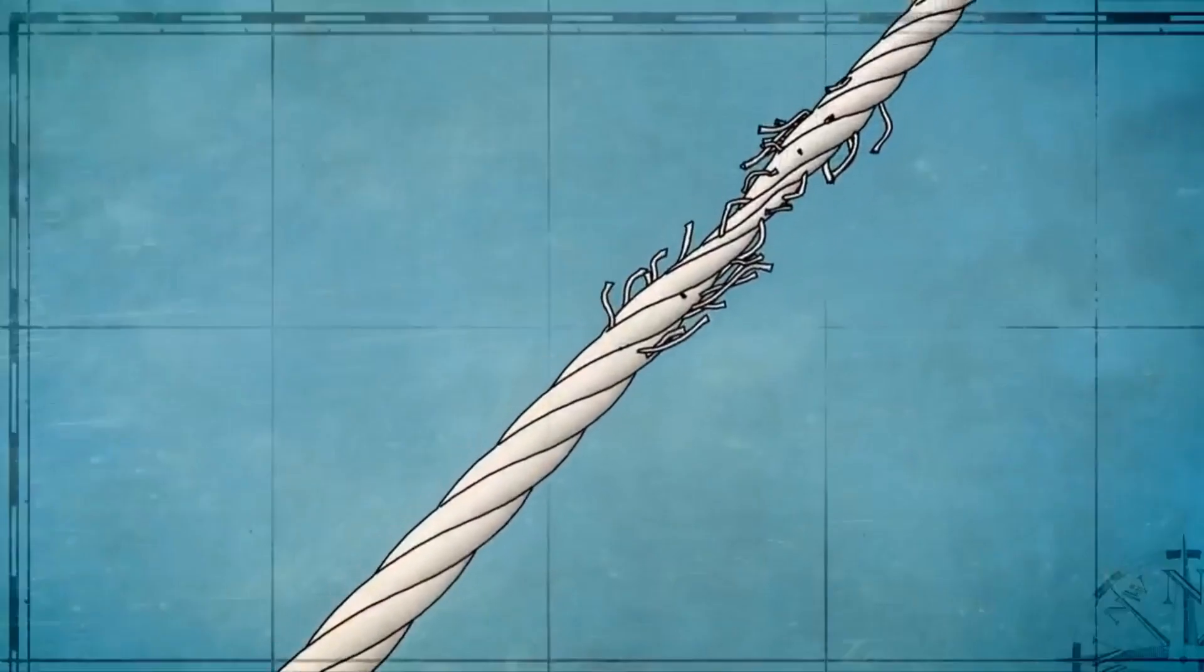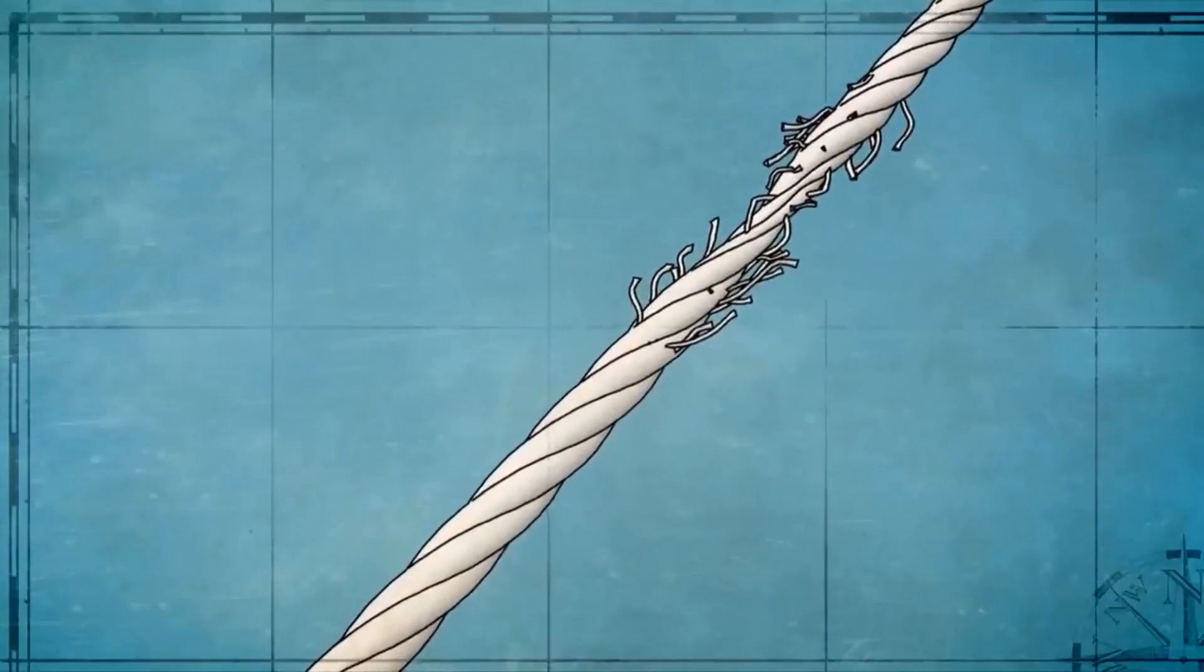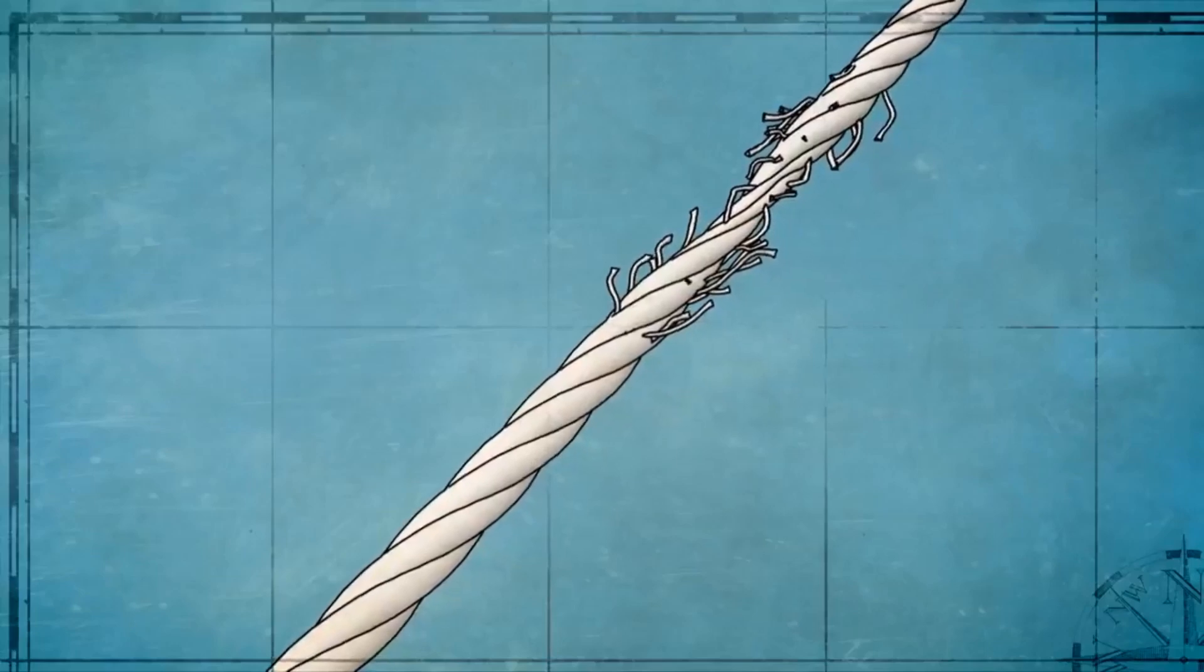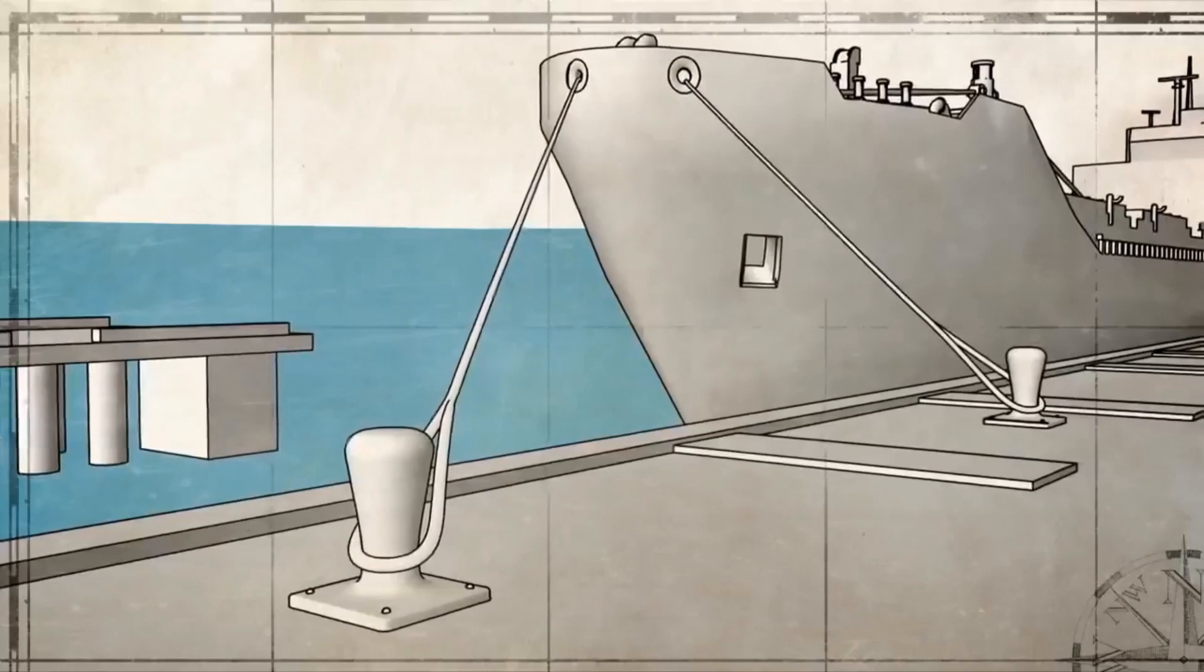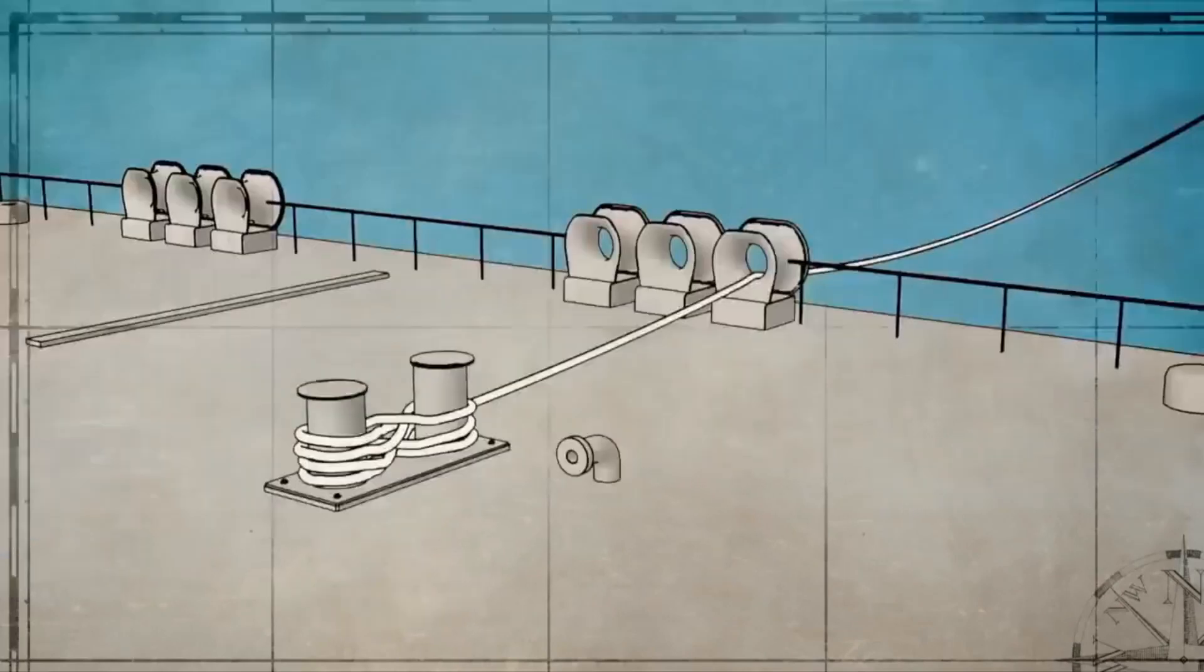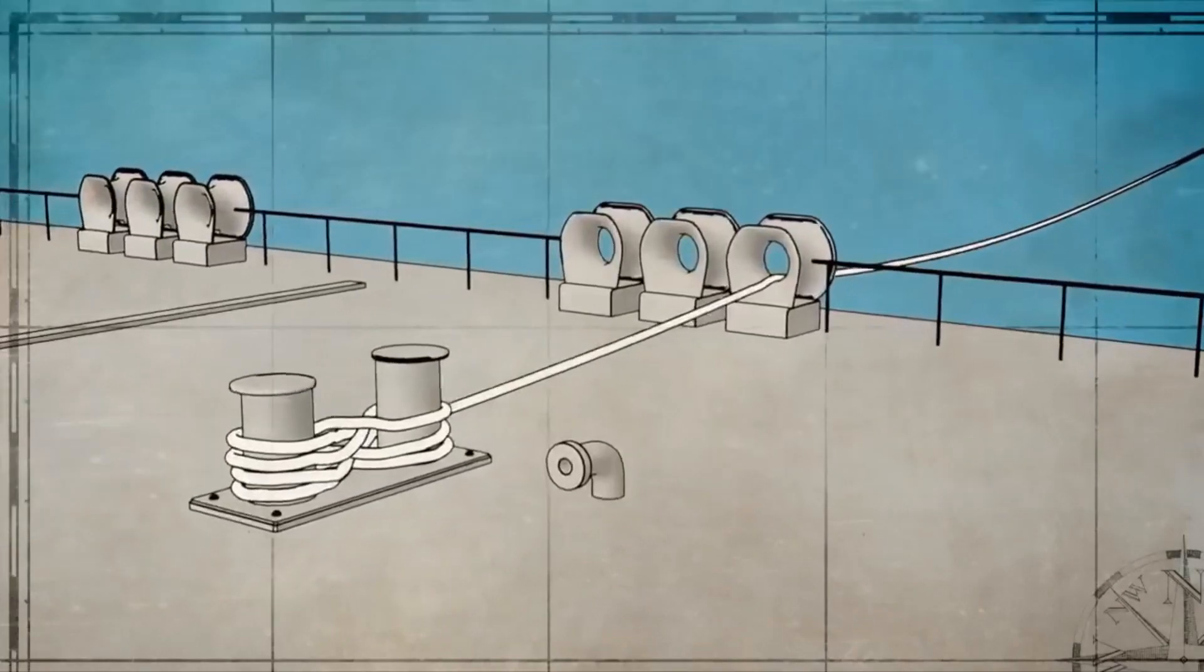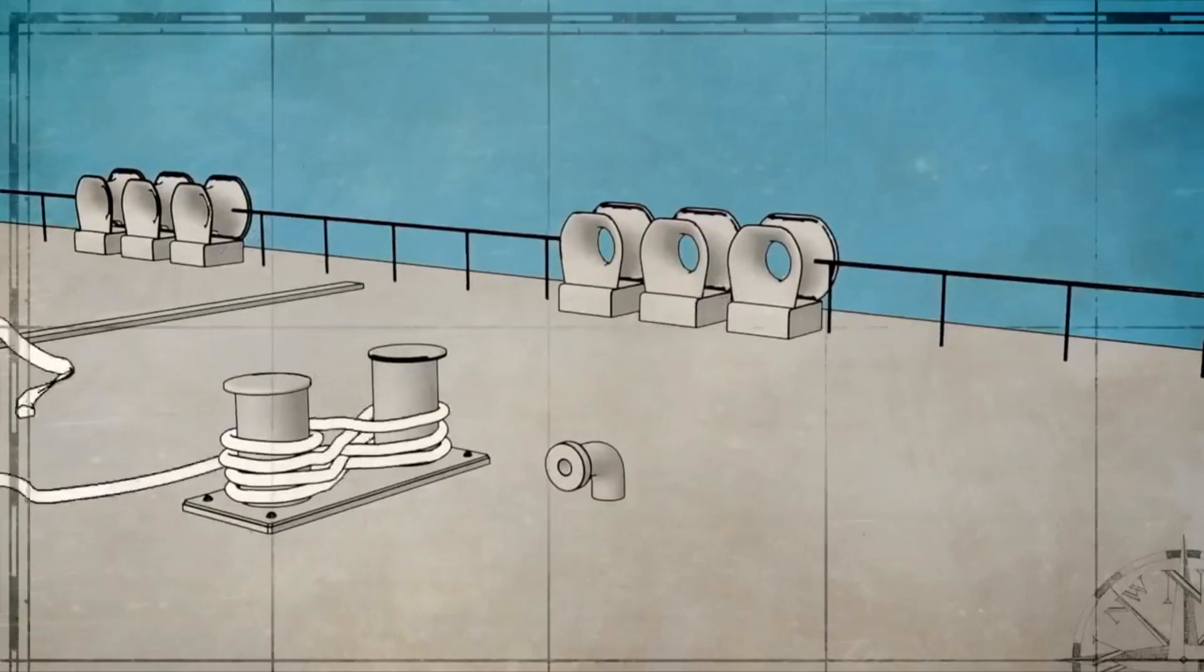Snapback is potentially the most deadly of all line handling hazards. A worn line, the wrong line, or a line under too much tension can part, snapback, and recoil, striking anything in its path with tremendous force.